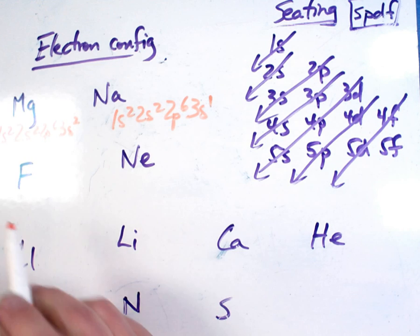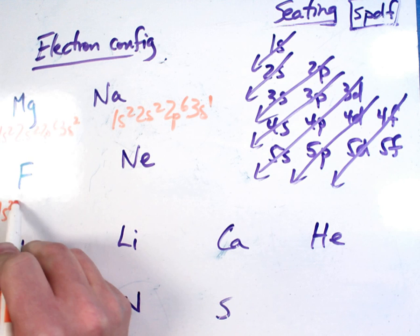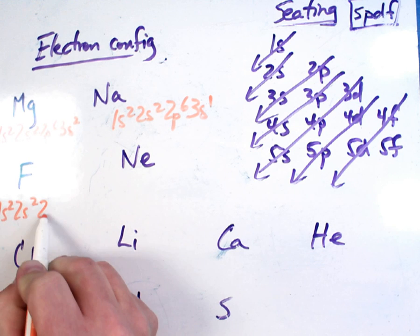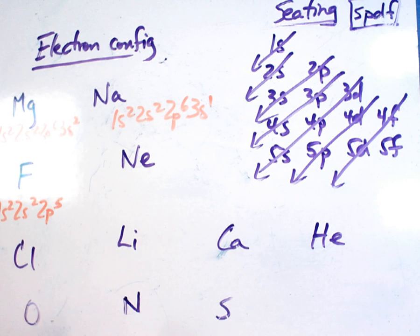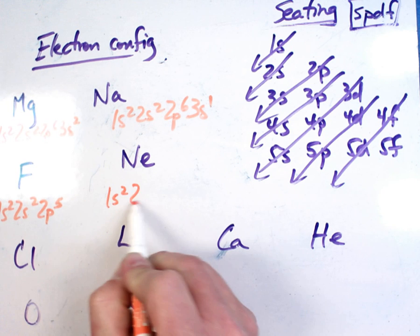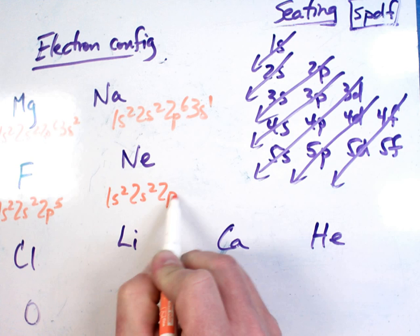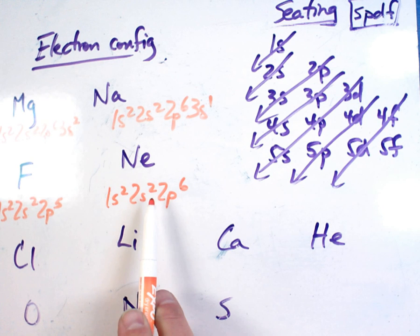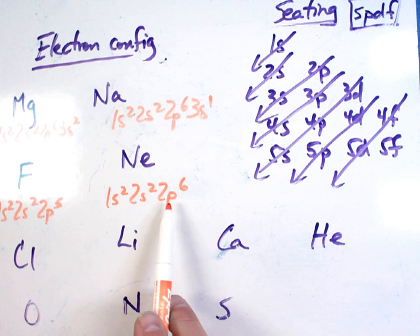When you do fluorine, you should have had 1s2, 2s2, 2p5. Is that one full? No, but it's close. Neon: 1s2, 2s2, 2p6. Notice, neon is full. We drew one in the last video that was argon. Interesting. It ended in p6 also.